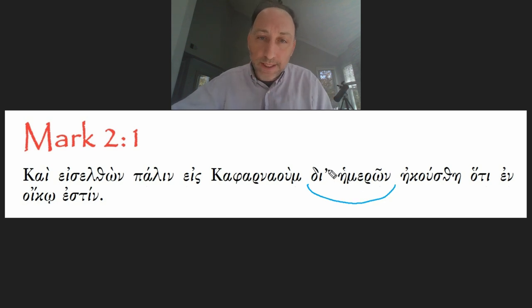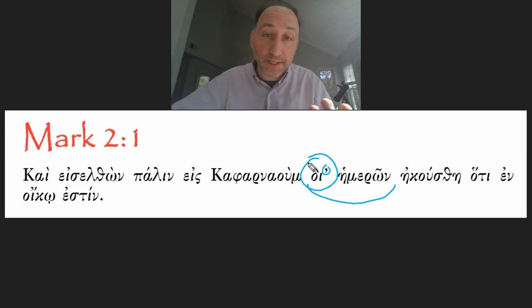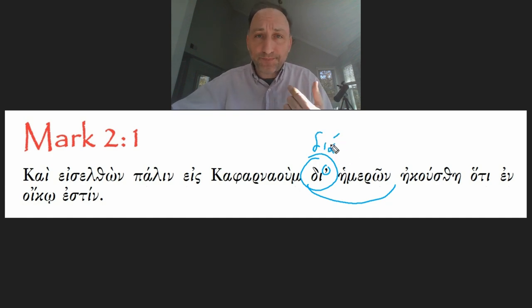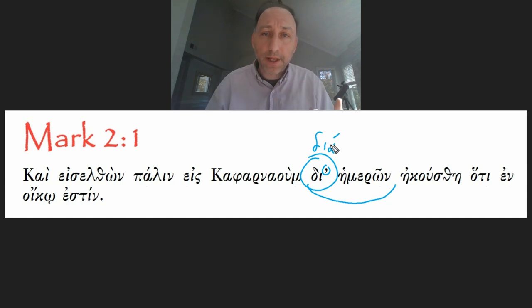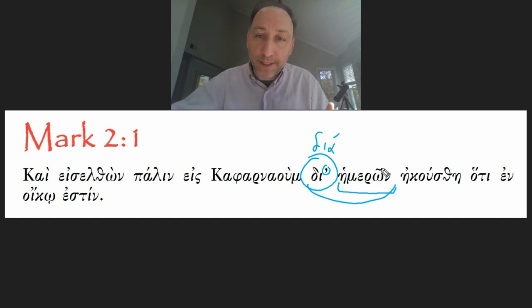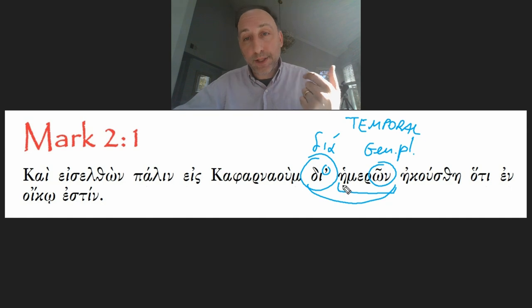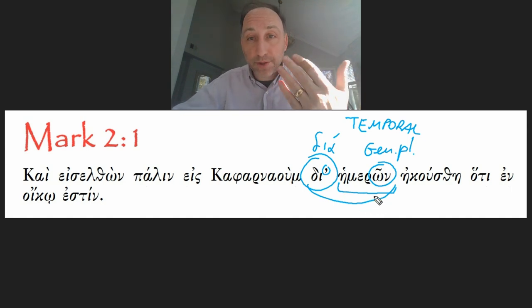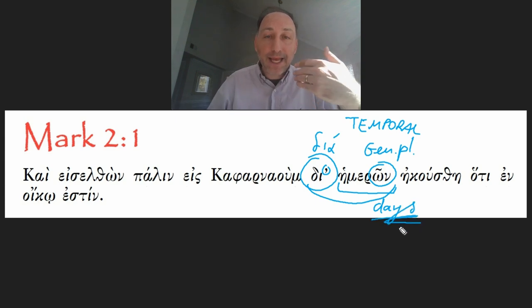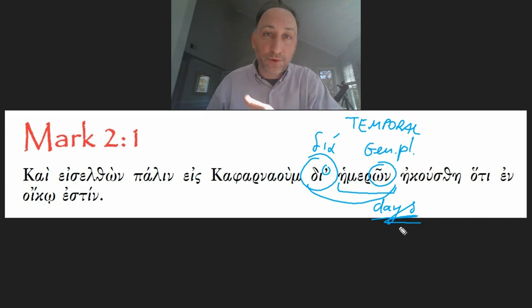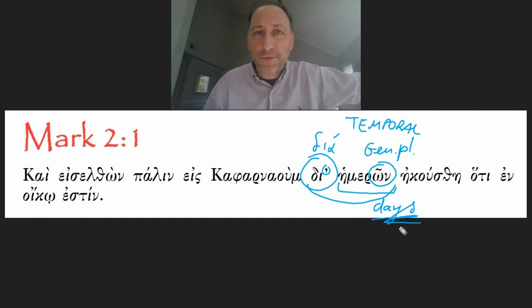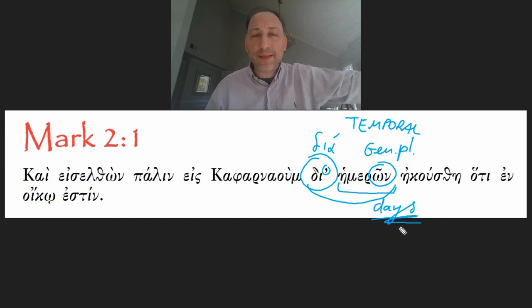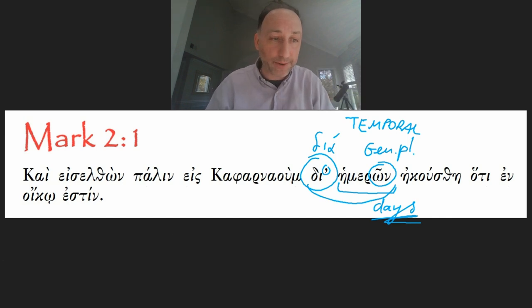Next comes δι' ἡμερῶν. The preposition is διά, which can mean many things. Here, connected with ἡμερῶν — the genitive plural of ἡμέρα, meaning 'day' — it gives us a temporal indication. So literally 'in days,' meaning 'after a few days.' Jesus stayed outside in deserted places for a few days, maybe a week or more, and then after some days he went back to the city of Capernaum.